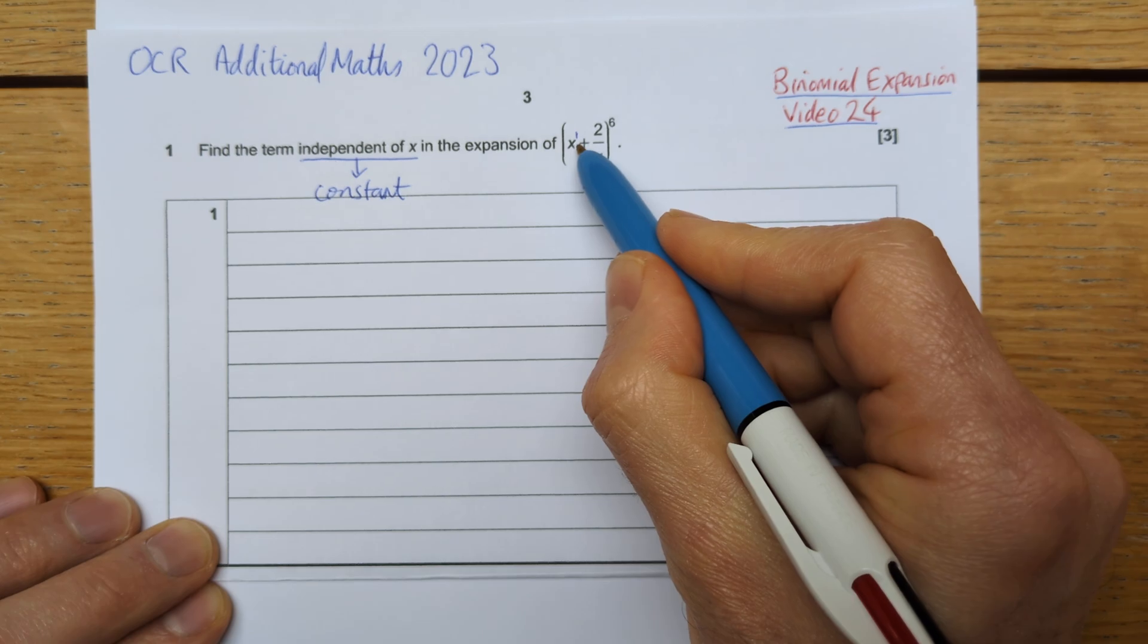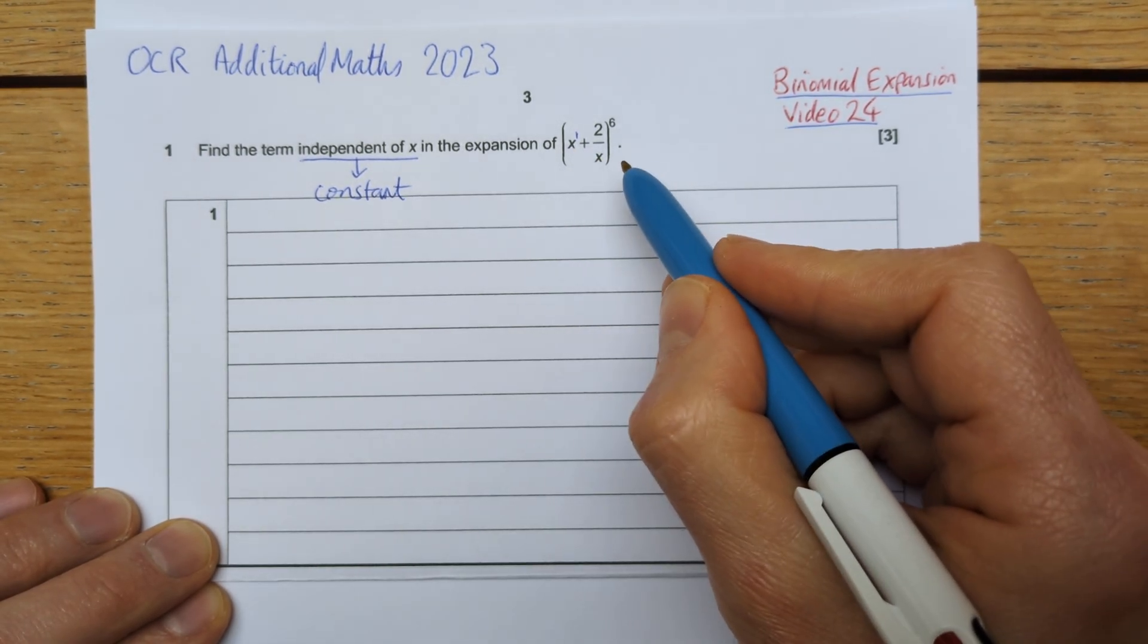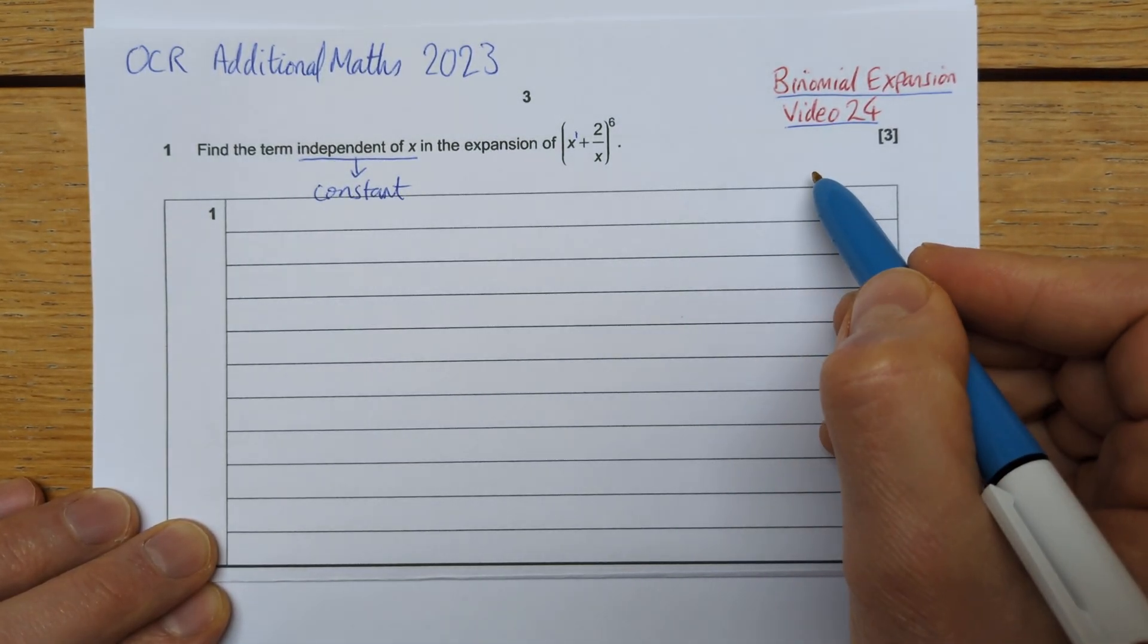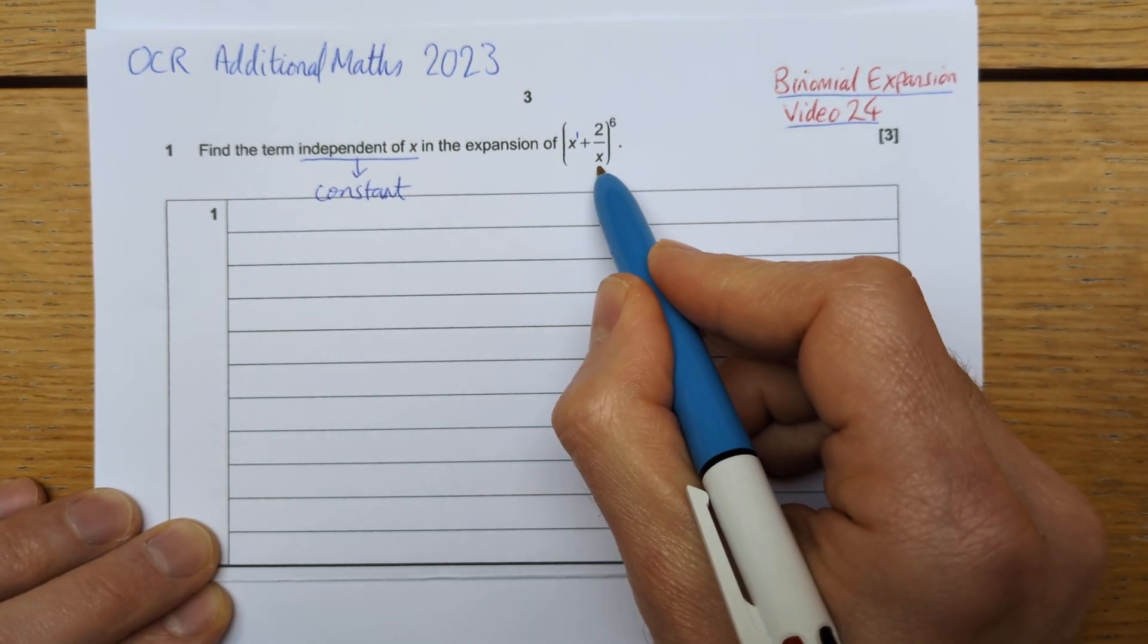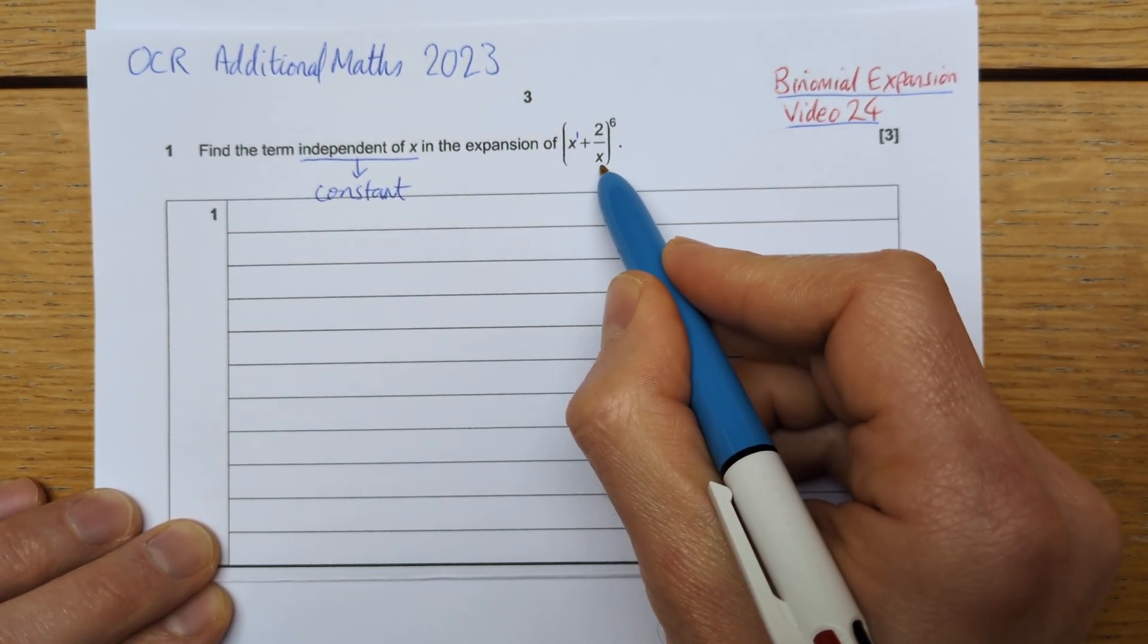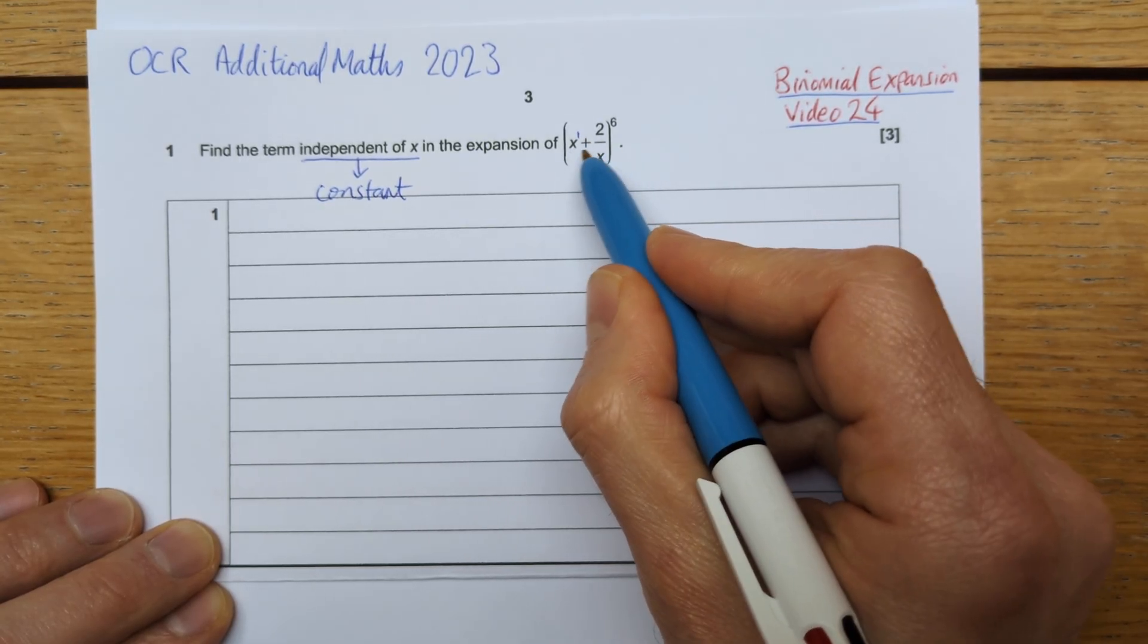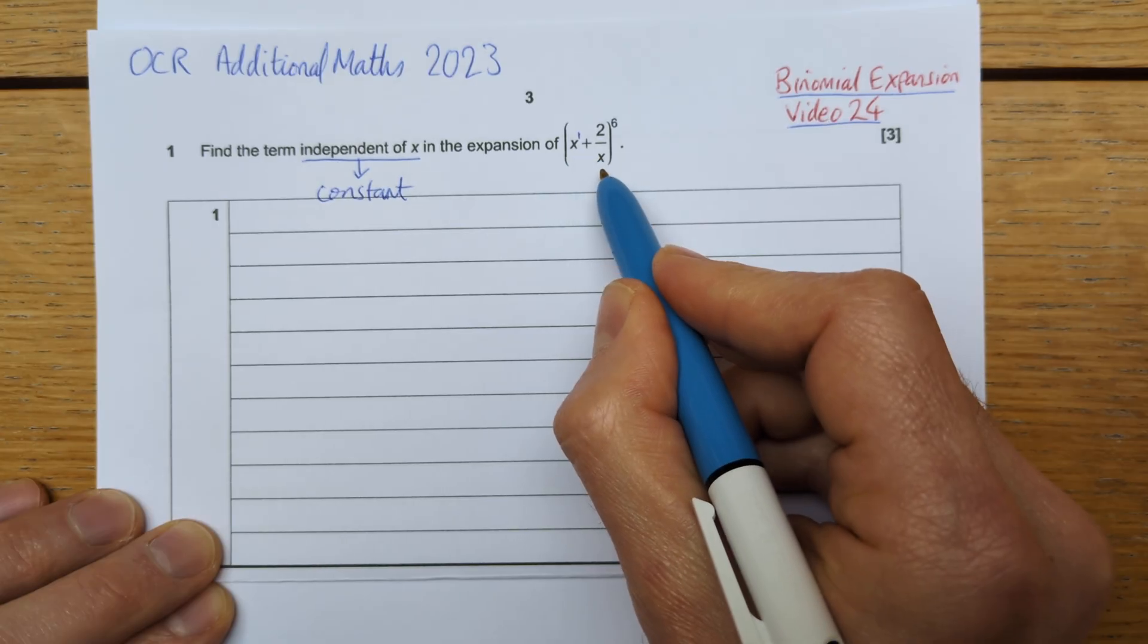However, I can't just multiply them together because I have 6 brackets in a row, so I need to choose 6 terms to multiply together from the 6 brackets. One from each of the 6 brackets. So I need to have a combination of these and a combination of these such that they would cancel each other out. Since this is x to the power of 1 and this is x to the power of negative 1, I need the same amount of each of those. And so from the 6 brackets, I need 3 of these and 3 of those.